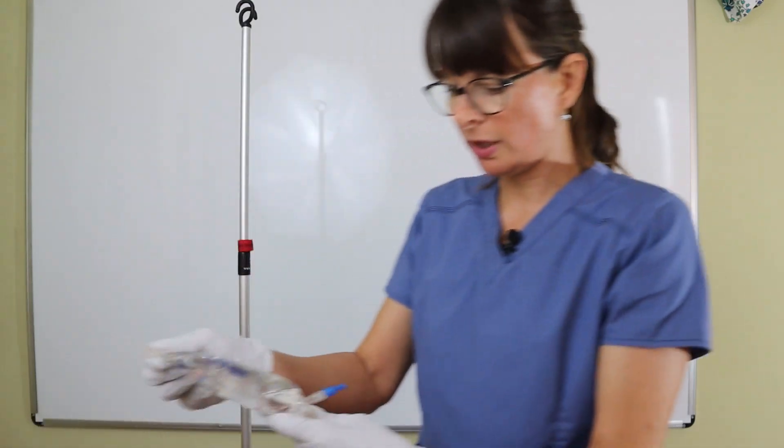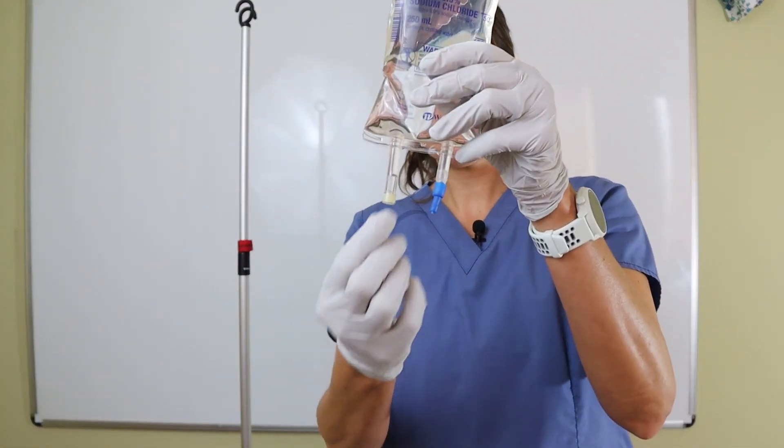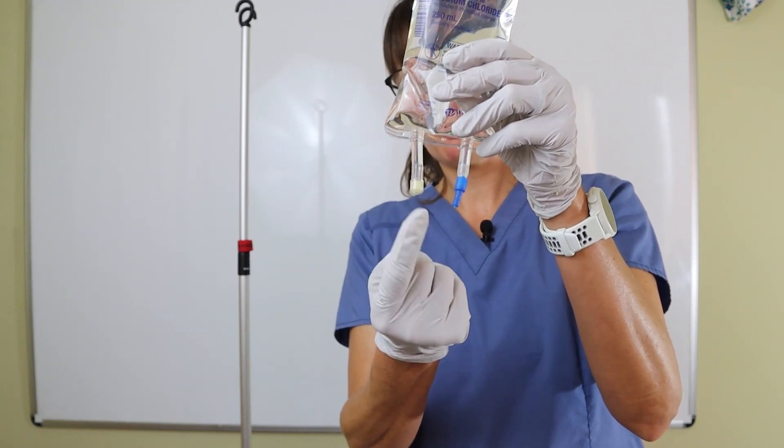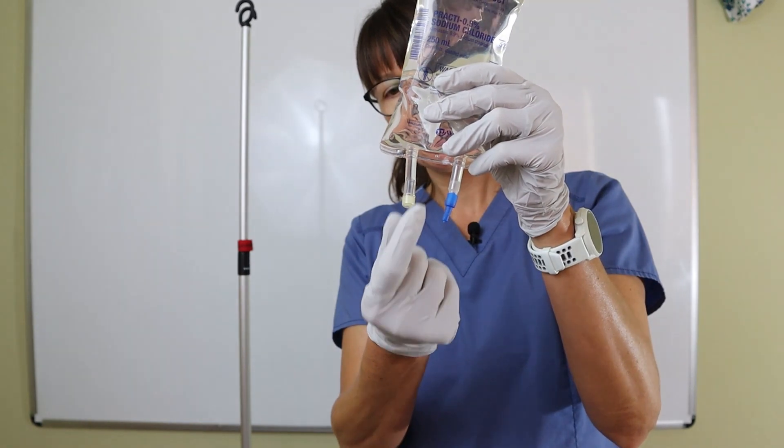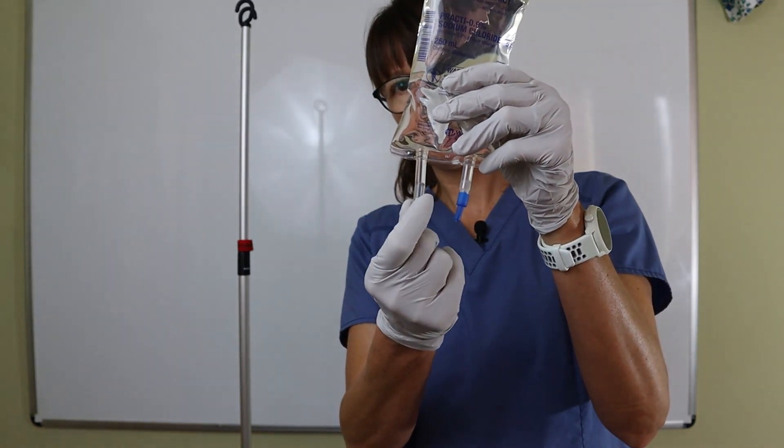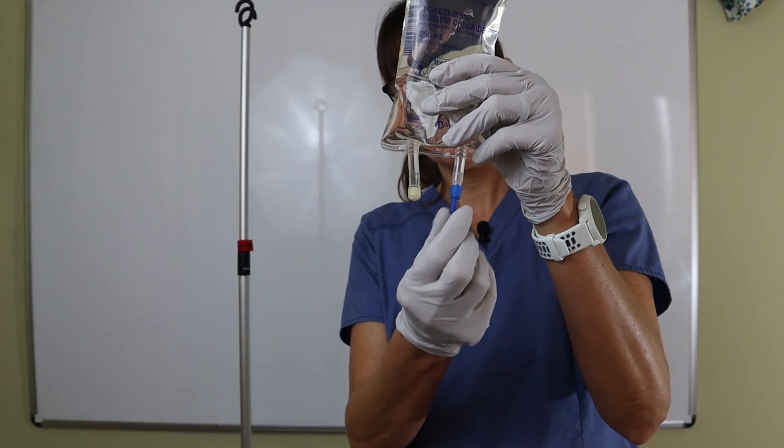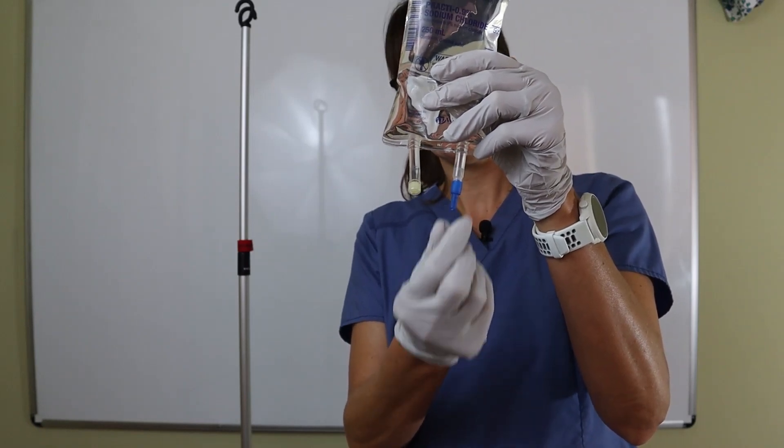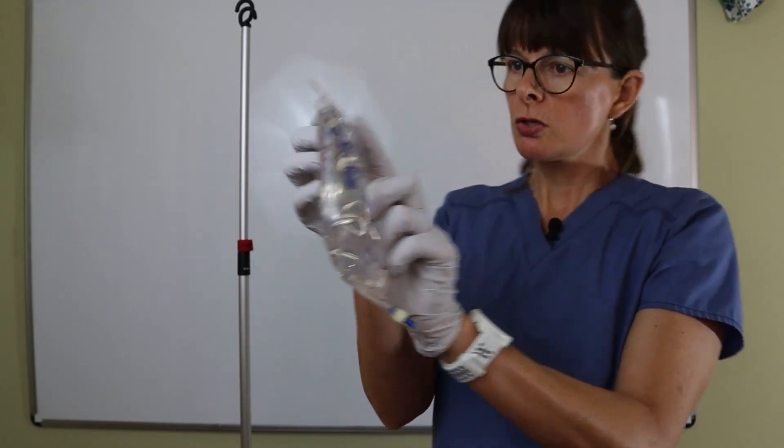The easiest way to do this is to unhook it and look at the different ports. This one with the rubber port allows you to add medication, which we're not going to do for primary IV lines. This little blue stopper—think blue is fluid—is where we're going to hook up our primary IV tubing.